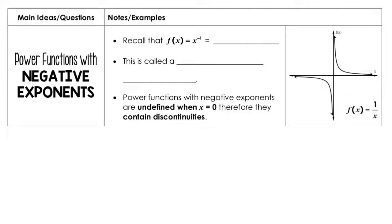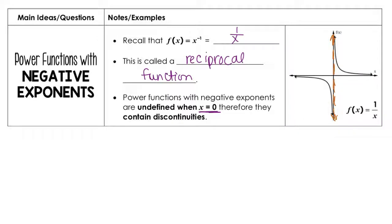The next type of function involves negative exponents, which produce reciprocal functions. For example, x to the negative 1 becomes 1 over x — the reciprocal function. With the reciprocal function, note there is a discontinuity at zero. We draw a vertical asymptote at x = 0 and also a horizontal asymptote at y = 0, which is not a discontinuity but just a horizontal asymptote.